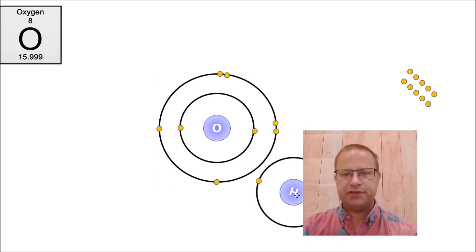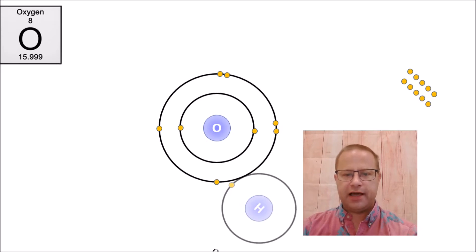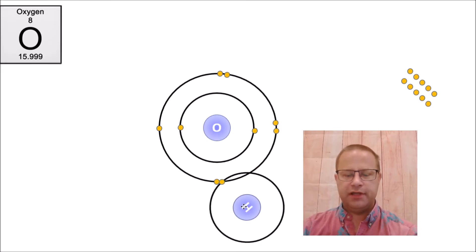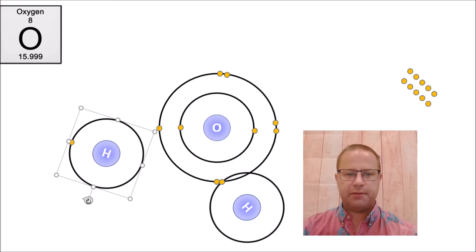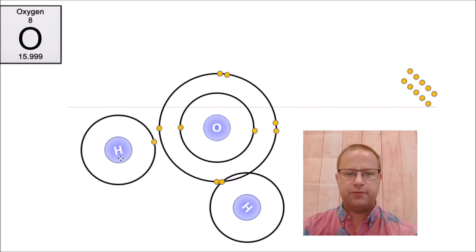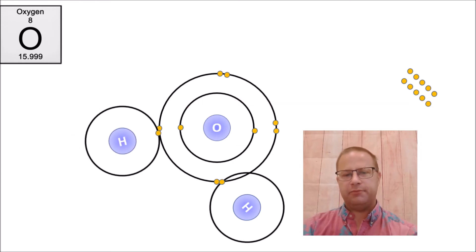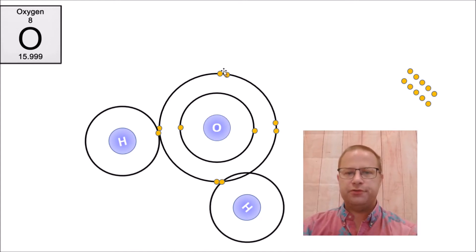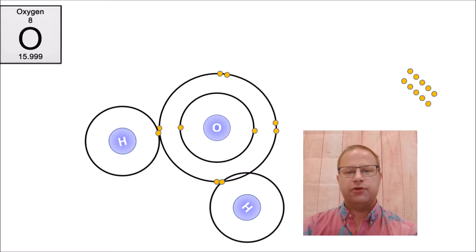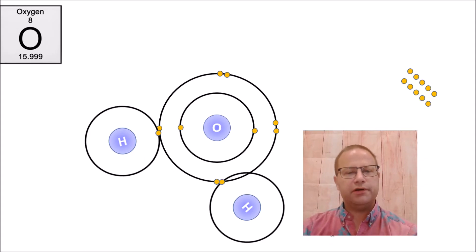Let's throw in some hydrogen. Hydrogen had one electron. If I throw in one hydrogen and then another hydrogen, I can form a covalent bond between hydrogen and oxygen. Here we have a molecule of water. We can now count one, two, three, four, five, six, seven, eight electrons in the outer shell of oxygen, and two electrons in the outer shell of each hydrogen. These electrons spin very quickly, sometimes around hydrogen and sometimes around oxygen. Water is much more stable than either hydrogen or oxygen by itself.